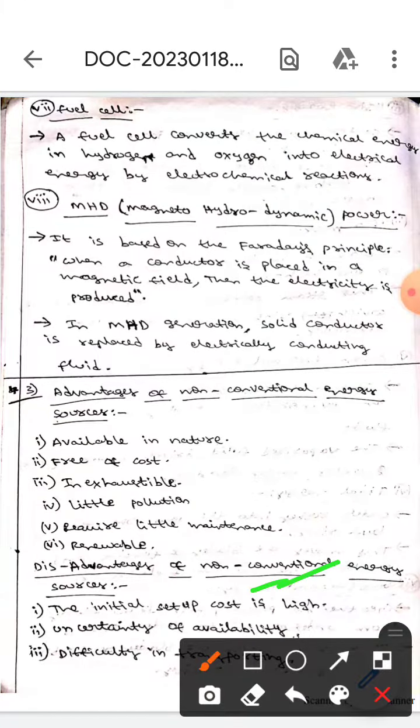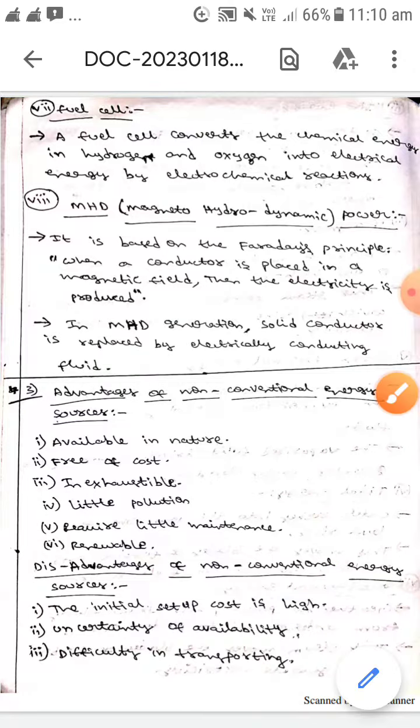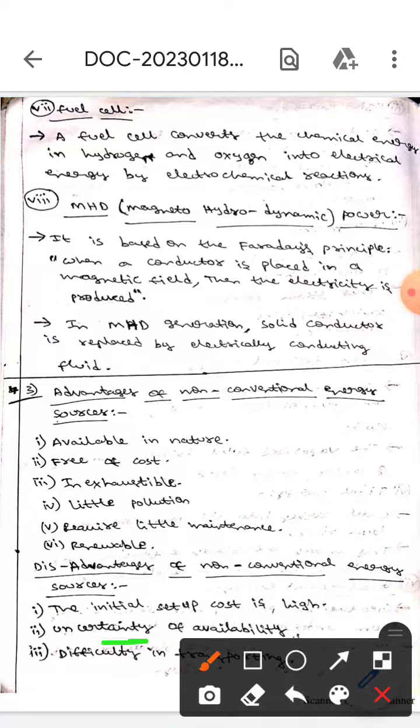The initial setup cost of non-conventional energy sources is very high. There is also uncertainty of availability, which means they are not available 24 by 7.